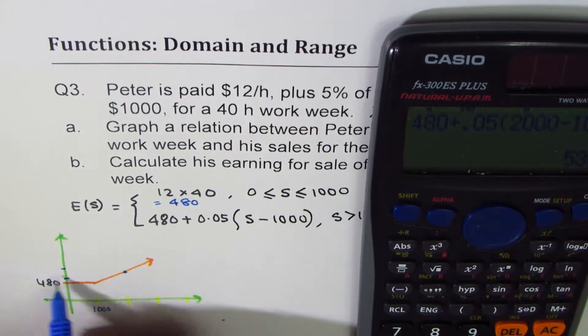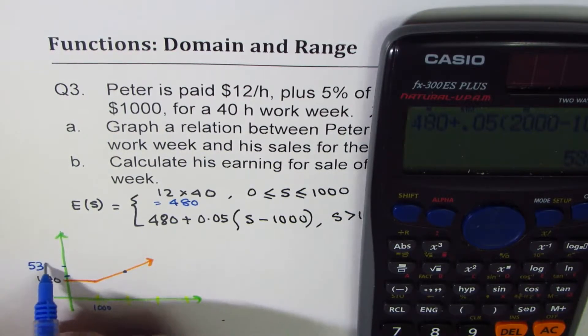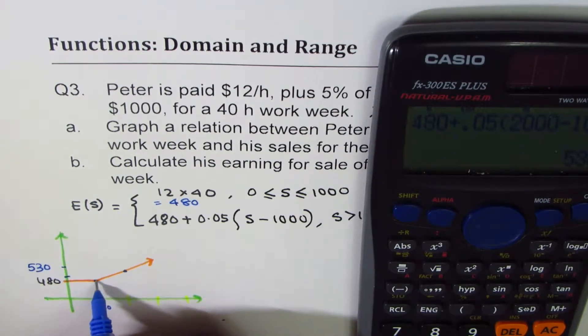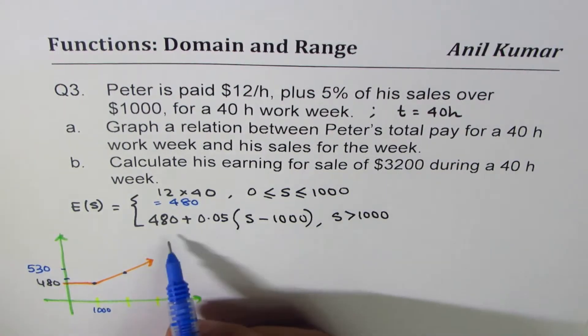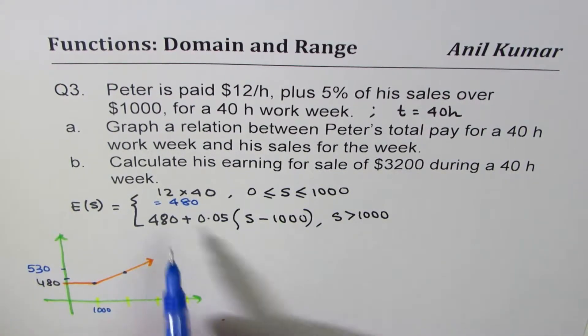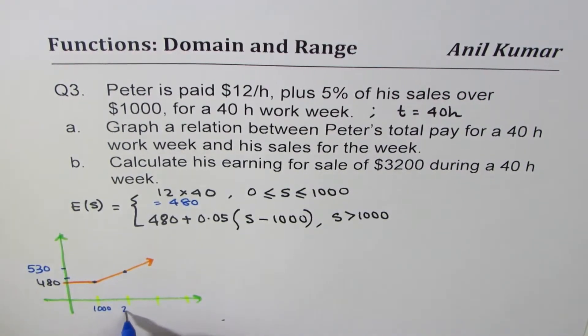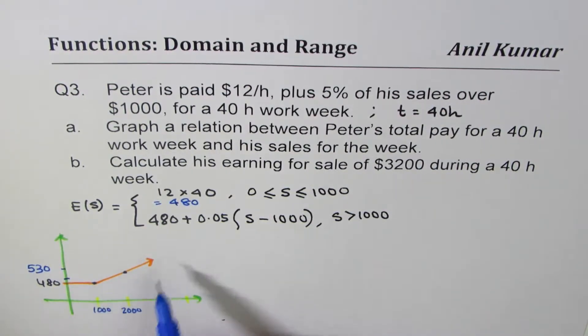So this is kind of, this point is 530, do you see that? So that is the rise and it has to be continuous. If it is 1000 it is 0, I mean 480 plus 0, it's just the same thing. So that is 2000 and so on. So that becomes the continuous graph for the earnings of Peter.